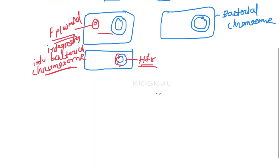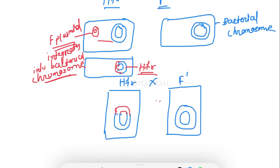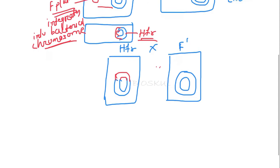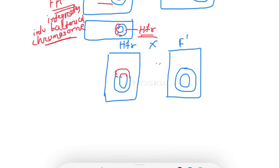So let's conjugate between these two, HFR and F-minus. Conjugation is the process of transfer of genetic material by physical contact, so first both cells will be connected with each other by a conjugation tube.